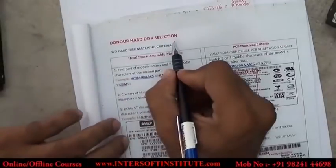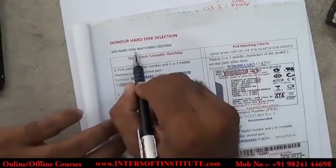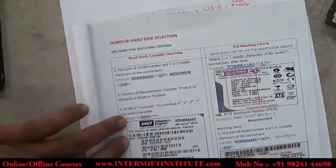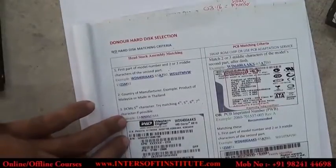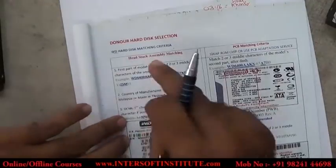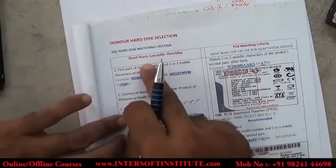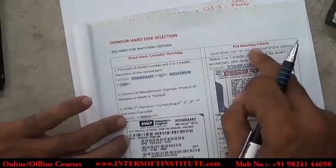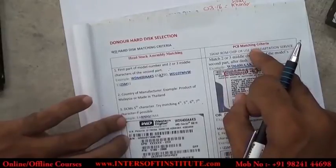For a donor hard disk — taking WD hard disk as an example — the matching criteria has two parts: first is the head stack assembly, and second is the PCB matching criteria. If the PCB is not working, we also have to match these criteria.